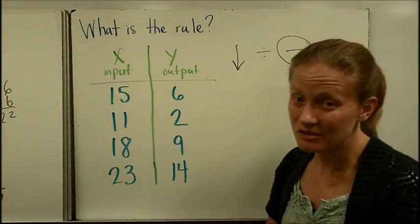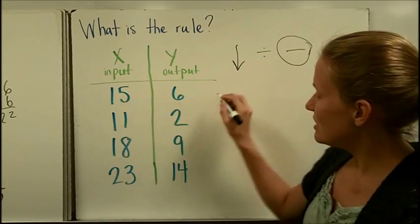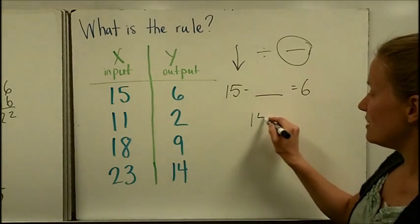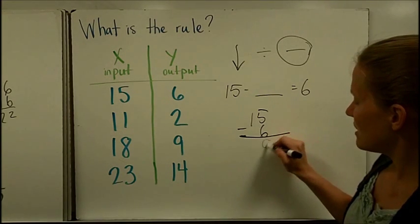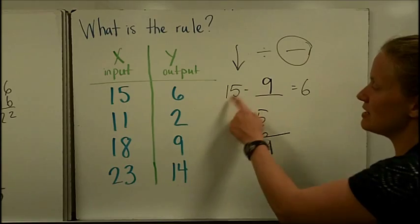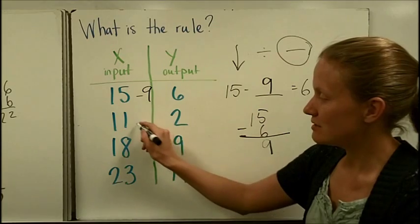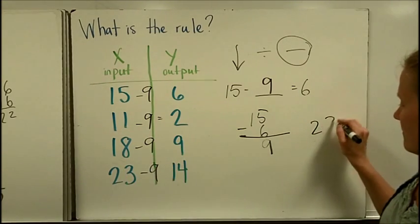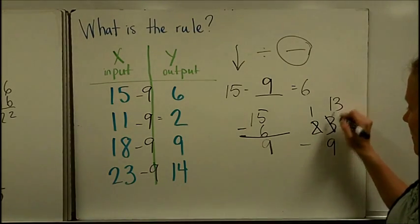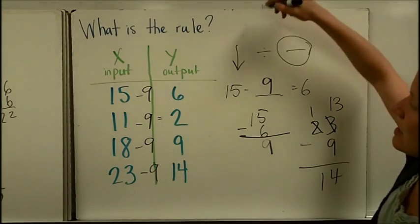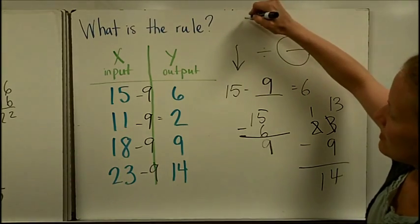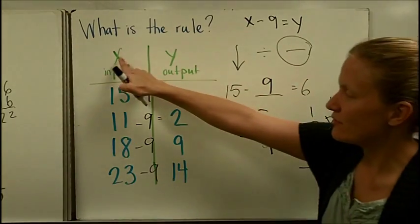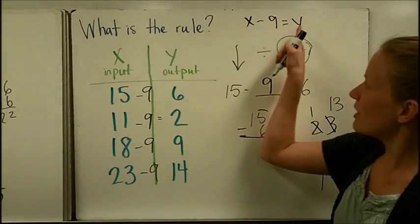Let's start with subtraction because that's the easier one to figure out. So I'm going to think 15 minus something is going to equal 6. Well one way that you can figure that out is to go backwards, do 15 minus 6 and we get 9. So it works the same to say that 15 minus 9 equals 6. So we think this might be a minus 9 pattern. Let's see, is 11 minus 9 equal to 2? It does. 18 minus 9 equals 9. 23 minus 9, I have to borrow, does equal 14. So the rule is we can say the x, that's the input, minus 9 equals y. So whatever is in the x column, we take away 9 and we get y as the difference.